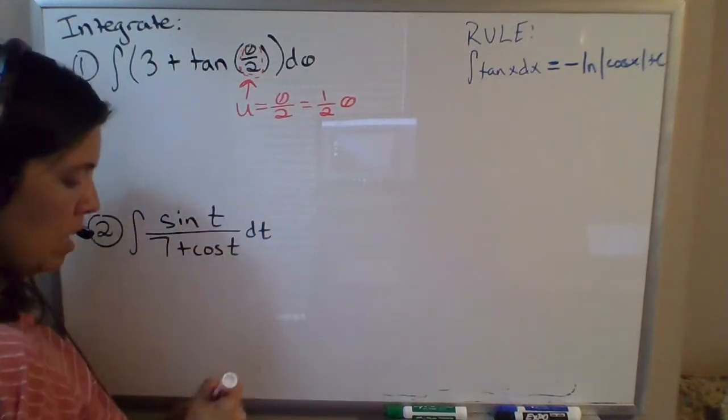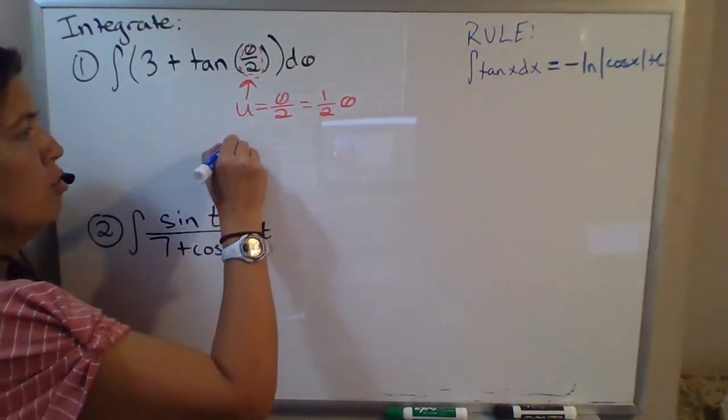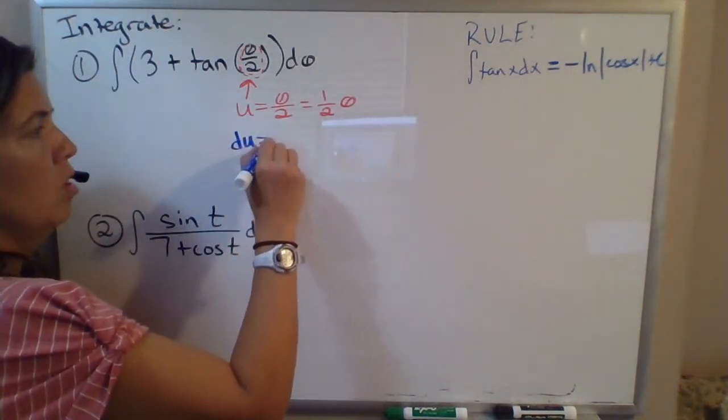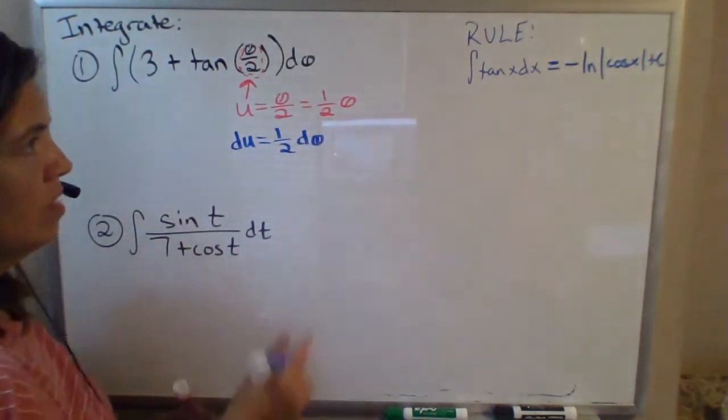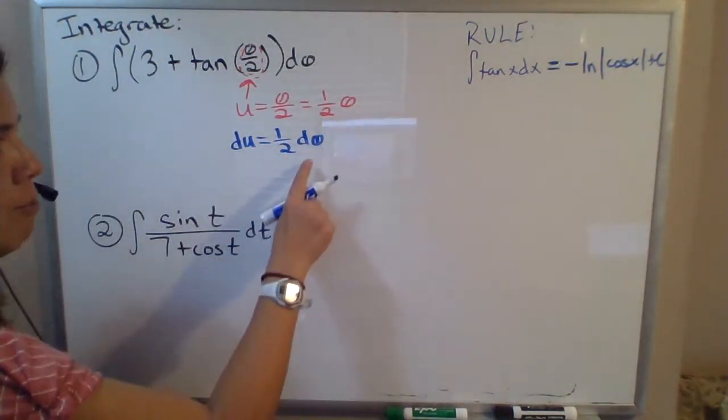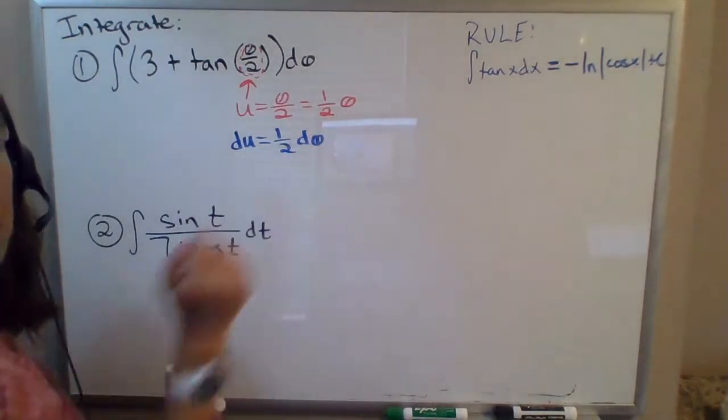And that helps when you're thinking about the derivative. For the differential here, du would be 1 half times d theta. The derivative here is just 1 half times the differential of theta, differential of your independent variable.